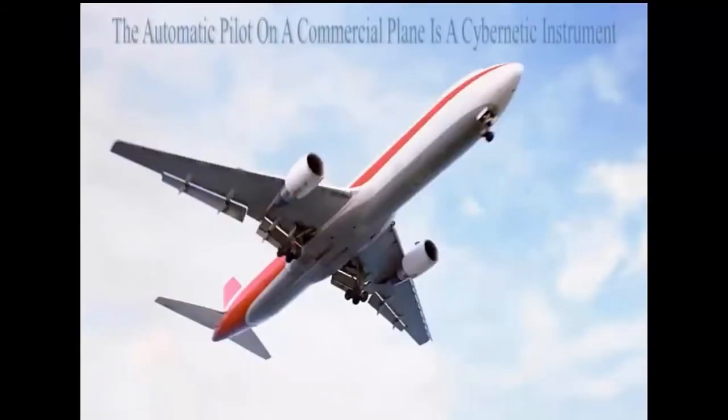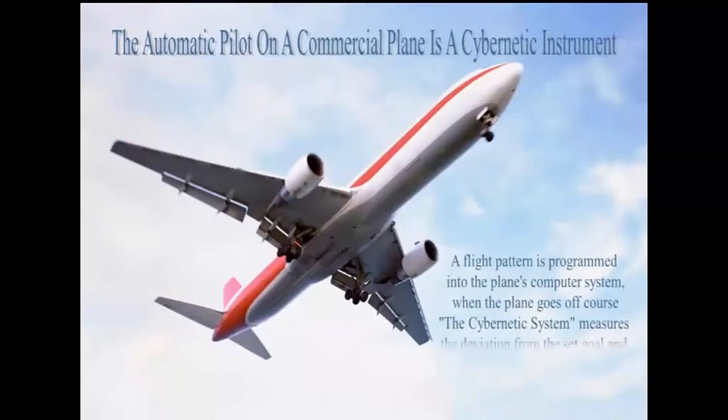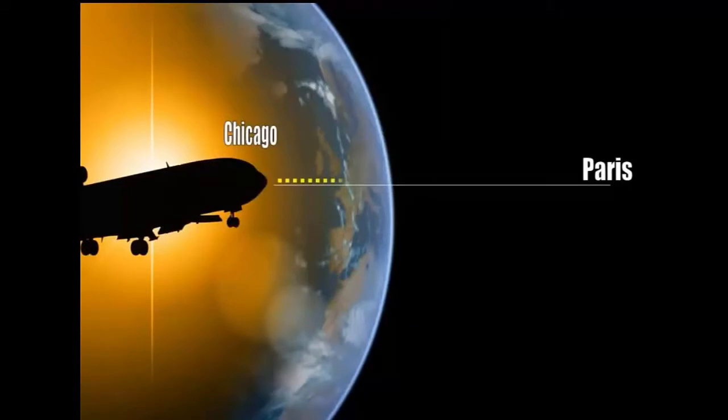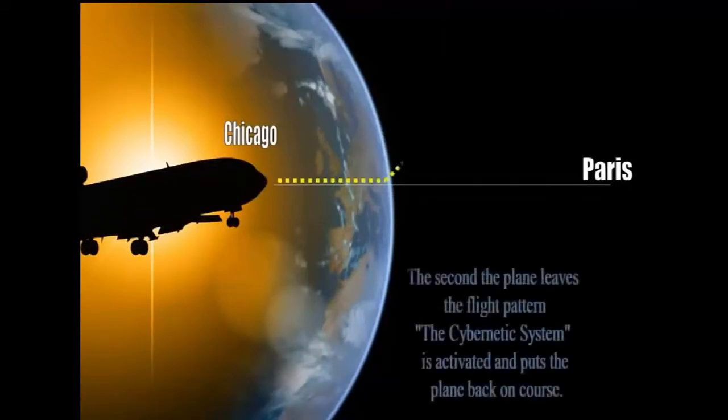Here's another example. Here's an airplane on a flight from New York to Paris. A flight pattern has been programmed into the plane's computer system. When the plane goes off course, the cybernetic mechanism measures the deviation from the set goal and corrects the flight pattern. The plane's flying along, it hits some turbulence and starts to go off course. The cybernetic mechanism picks up the deviation from the set goal and brings the plane right back on course. The pilot didn't have to do a thing.